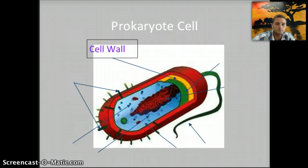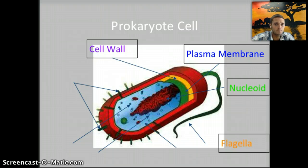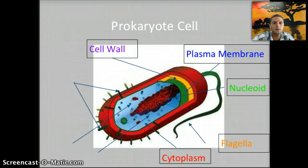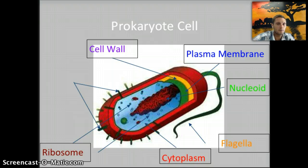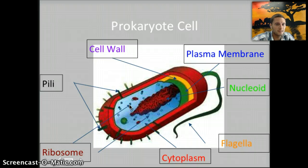Prokaryotes have cell walls and a plasma membrane. They have a nucleoid region — that's where the DNA is, a clump of the DNA together. They can sometimes have flagella, which is a tail that can be used for movement. They definitely have a cytoplasm, where a lot of those chemical reactions take place. Ribosomes are also present — you can see the small little dots — very important because they are used to produce proteins. And they can have pili, which are also helpful in movement and attachment.